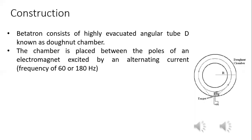Betatron consists of a highly evacuated angular tube known as a doughnut chamber. The chamber is placed between the poles of an electromagnet excited by an alternating current of frequency 60 to 180 Hz.